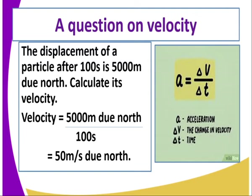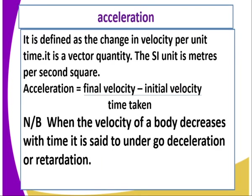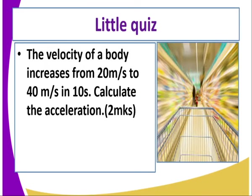The acceleration of a body can also be determined. The acceleration formula is change in velocity divided by change in time. It is a vector quantity, and the SI unit is meters per second squared. When the velocity of a body decreases with time, it is said to be decelerating or undergoing retardation. Retro quiz: the velocity of a body increases from 20 meters per second to 40 meters per second in 10 seconds — calculate the acceleration of the body.